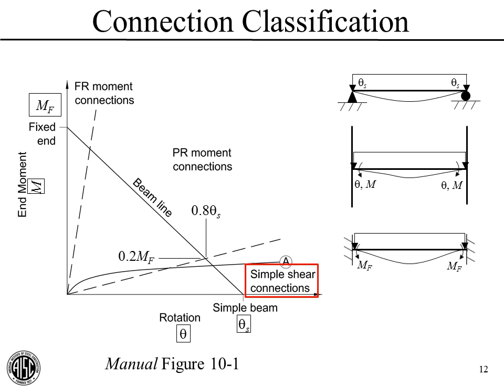Let's take a quick peek back at our connection classification curve that we saw in Sessions 1 and 3. We need some way to classify beam-to-column connections in regard to their restraint at the end, and this is how we do it in the AISC manual. We're down here at the bottom right for today, just like last time, and these connections will inevitably have some end moment, but it will be small enough that we can design the connection and member as if it's a pinned connection, accomplished through ensuring adequate ductility.